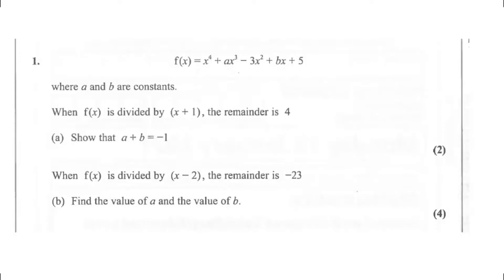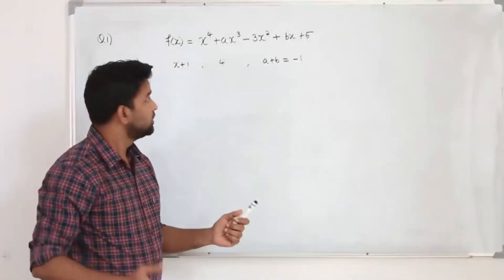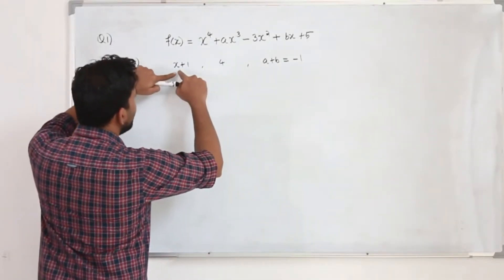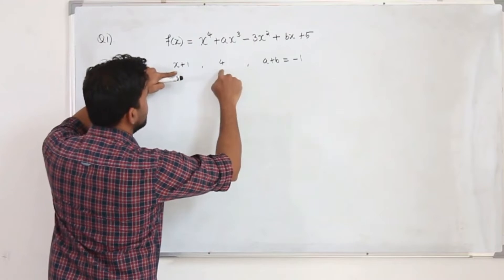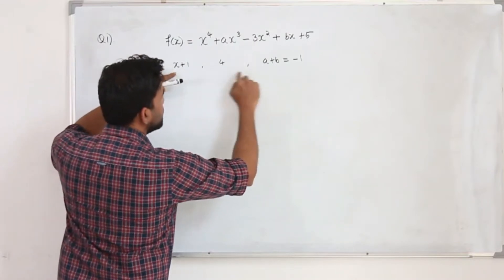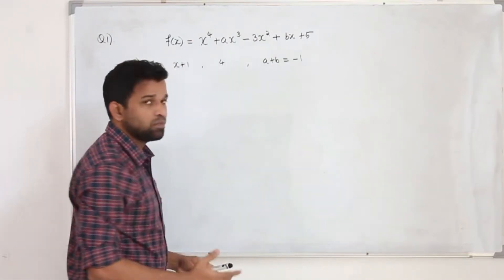Question number 1. f of x equals x to the power 4 plus ax cube minus 3x squared plus bx plus 5 where a and b are constants. When f of x is divided by x plus 1, the remainder is 4. Part A show that a plus b equals minus 1. The question carries 2 marks. So you are given a function. When the function is divided by this linear factor, the remainder is 4. So they want you to prove that a plus b is minus 1.